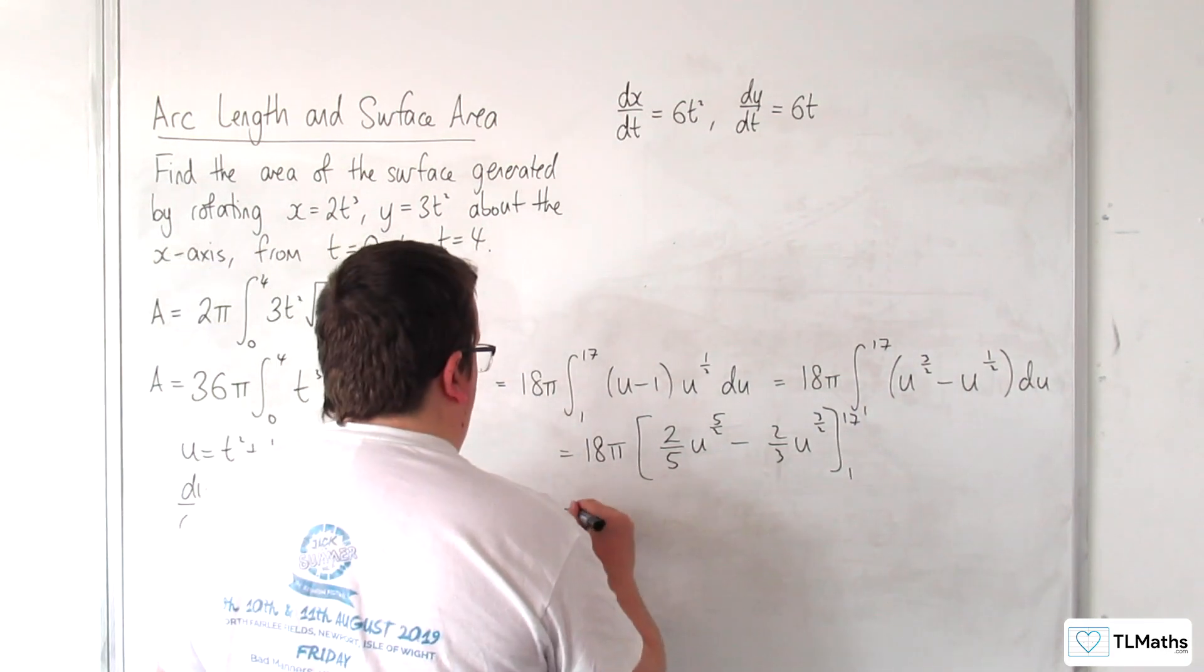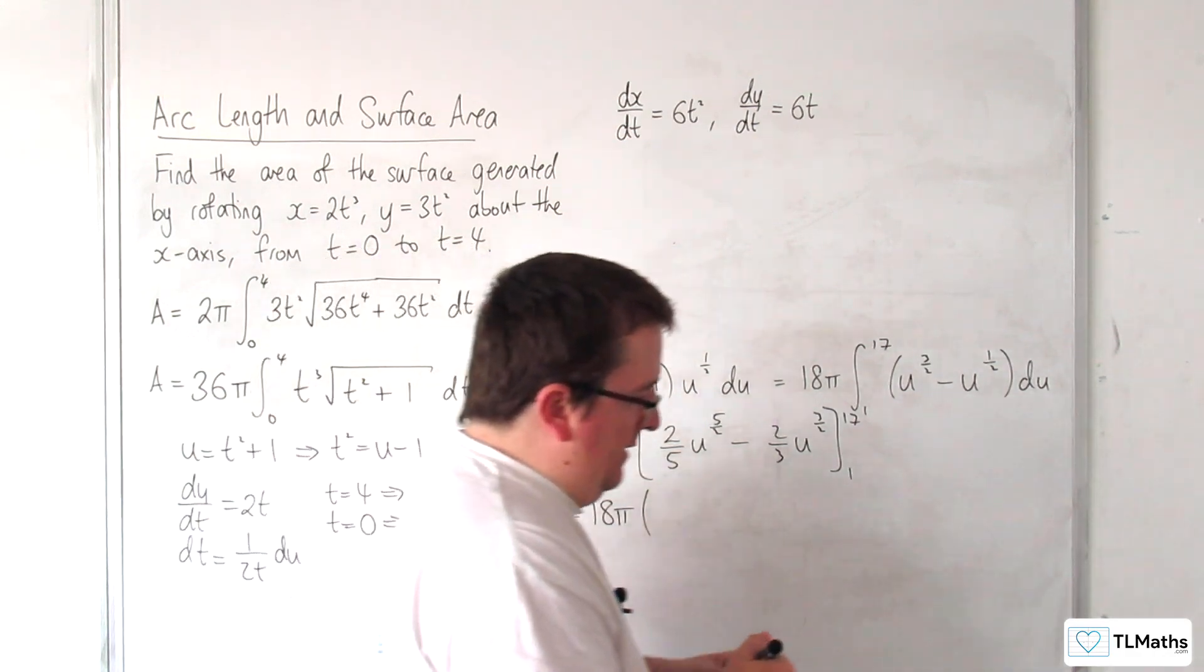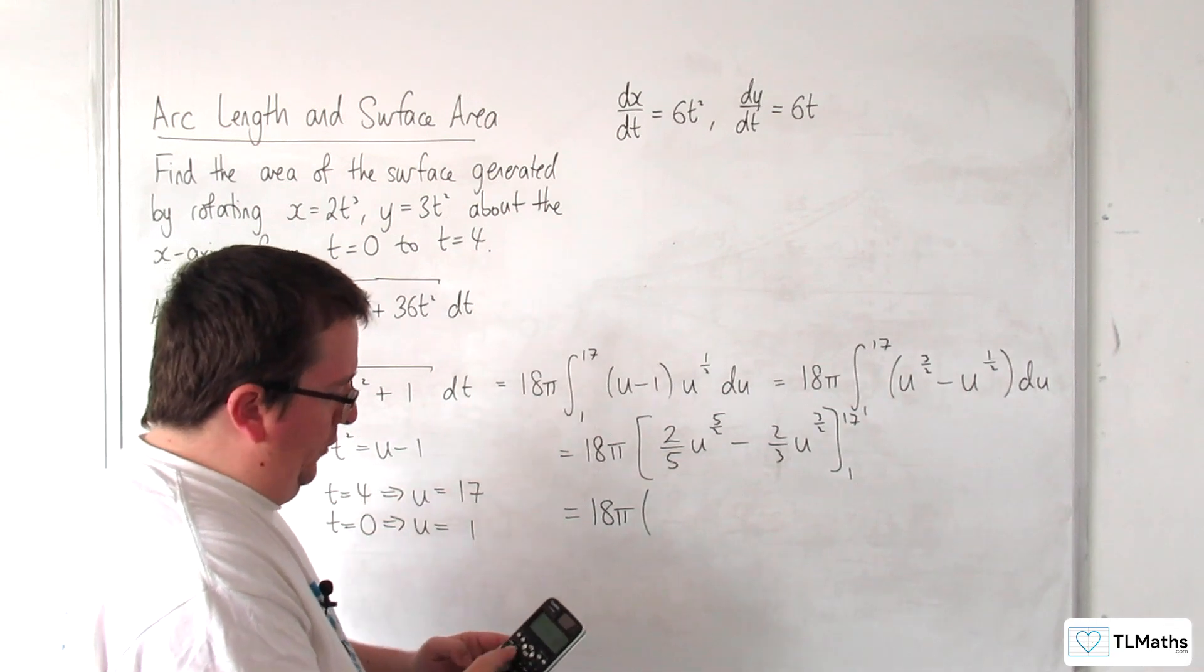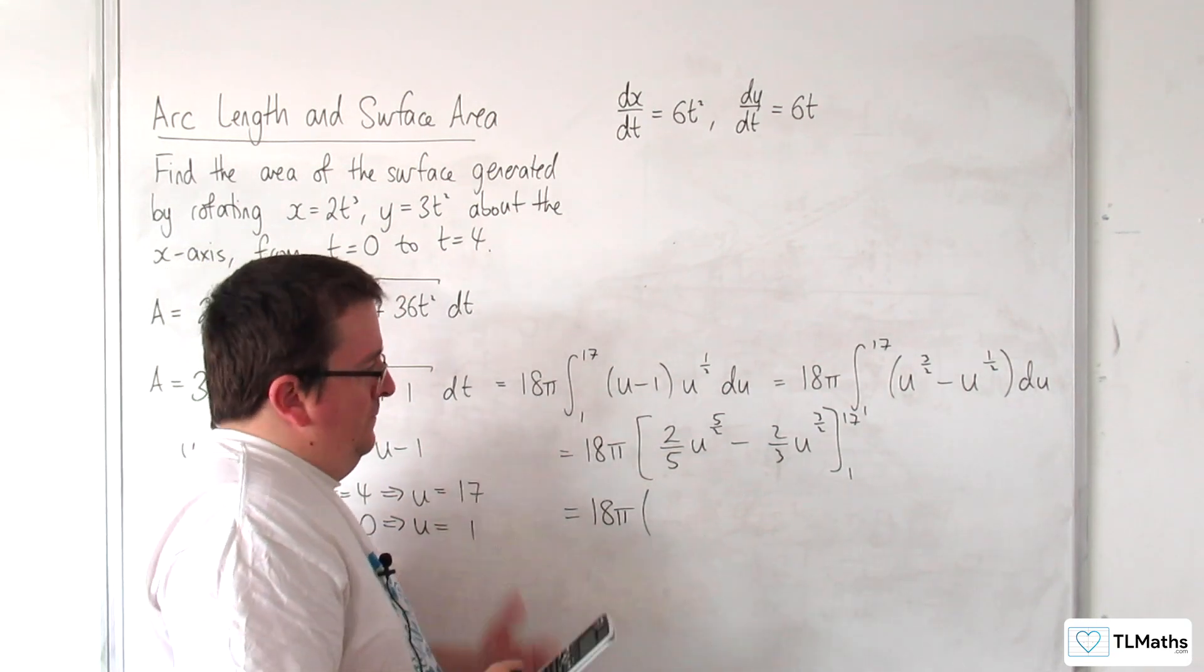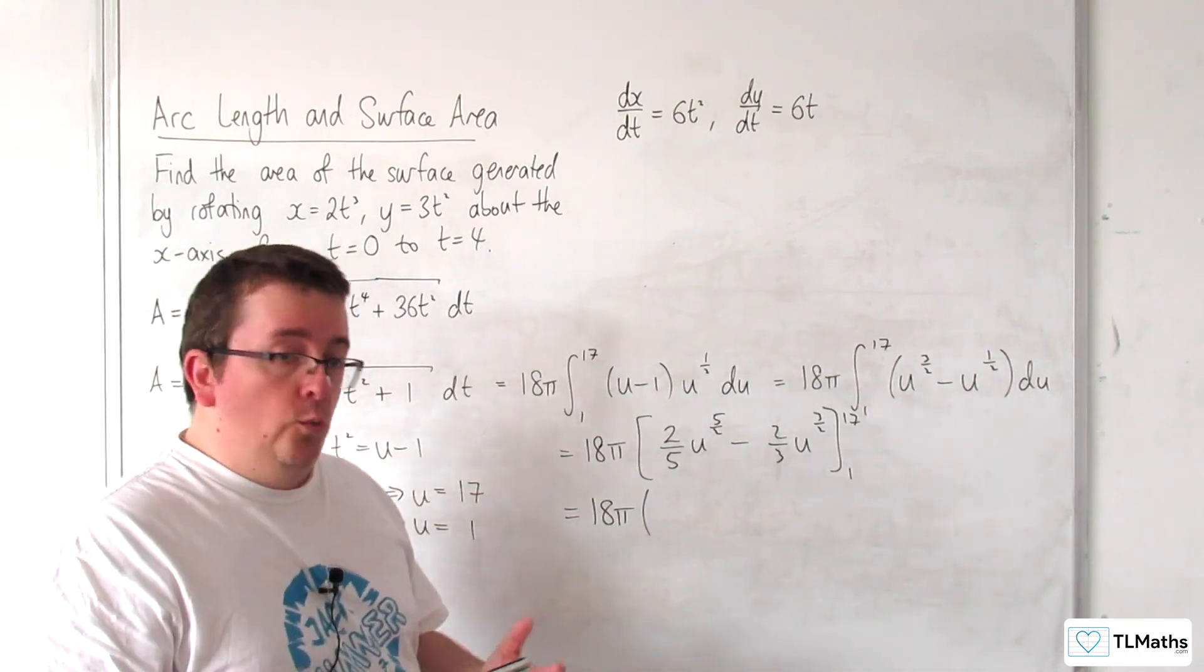Okay, right, 18π on the outside, so let's see what the calculator can make of this. So, I need the square root 17, and then I need to do that to the power of 5. The calculator doesn't like it. Right, okay, so we're going to have to do this the long-winded way then.